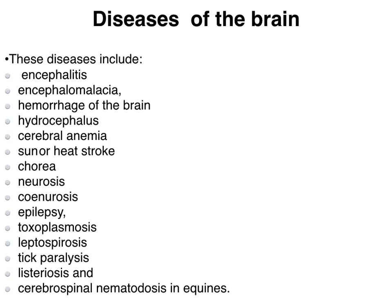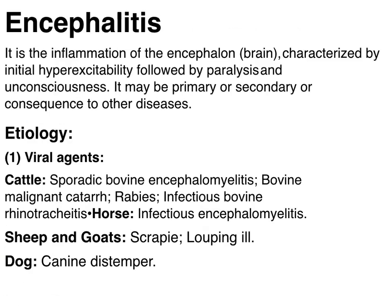Now, taking specifically the diseases of the brain: these include encephalitis, encephalomalacia, hemorrhage of the brain, hydrocephalus, cerebral anemia, sun stroke, cerebral anoxia, neurosis, epilepsy, toxoplasmosis, coenurosis, nematodes, and lymphoma.